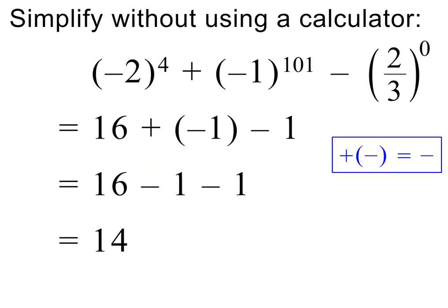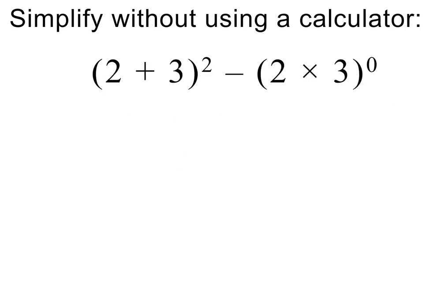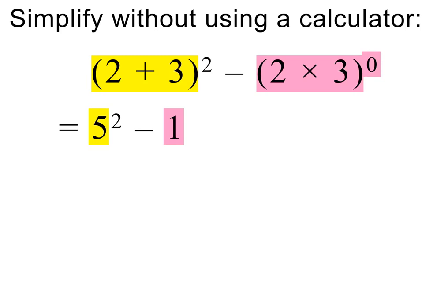Please pause and try the next example on your own first. I hope you remembered BODMAS — in other words, we first need to add inside the brackets. The second term is just 1, because anything to the power of 0 is 1. 5 squared is equal to 25, and 25 minus 1 equals 24. How did you do?